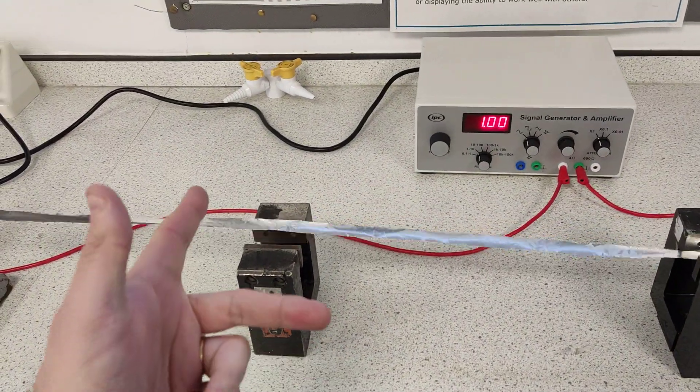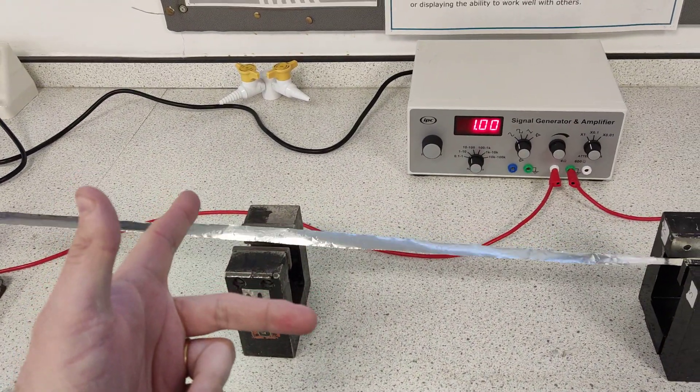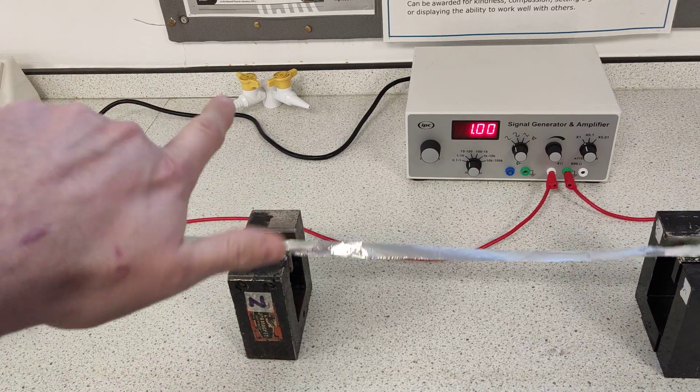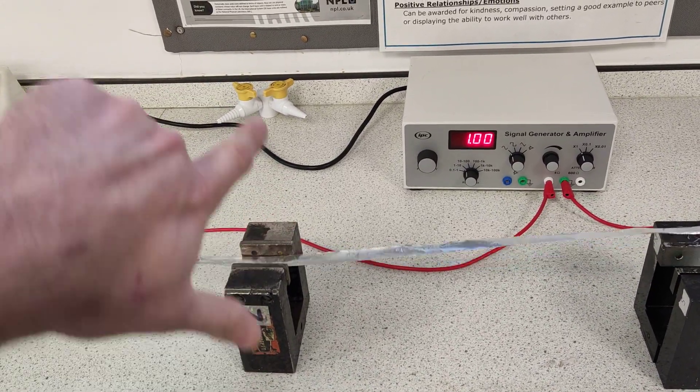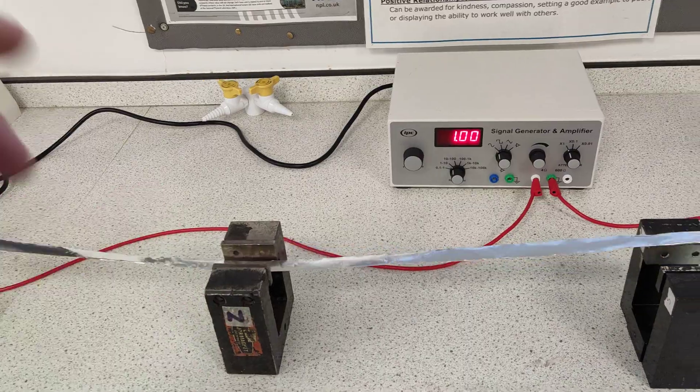So you've got your B, the current flow and a force, and then the AC signal changes it and it goes down the force as the current goes the other way.